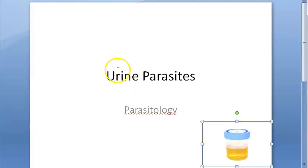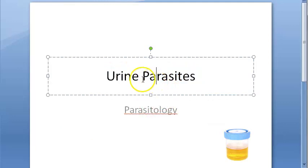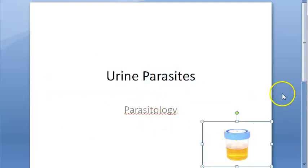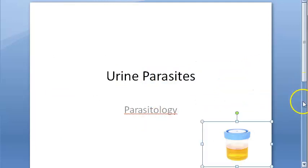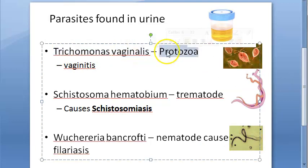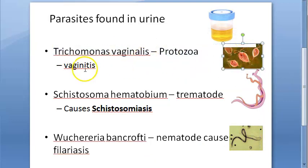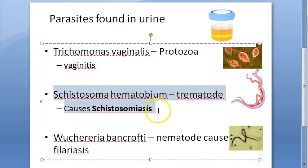In this video we want to look at the parasites which are present in urine. The question may just come as 'parasites in urine' — this is under parasitology. In urine, there are just three to note. First, Trichomonas vaginalis, which is a protozoa, and it causes vaginitis.